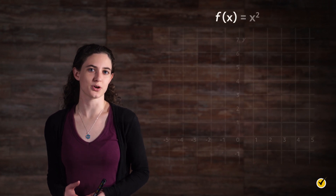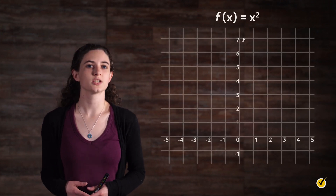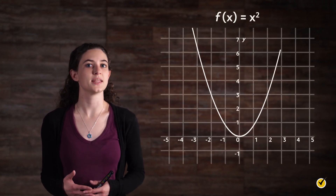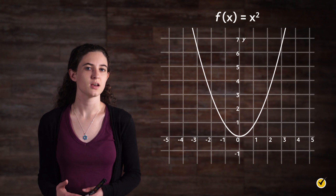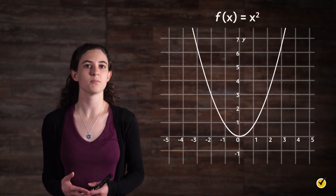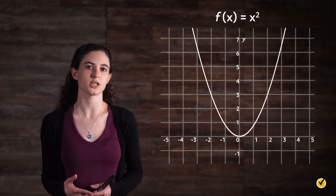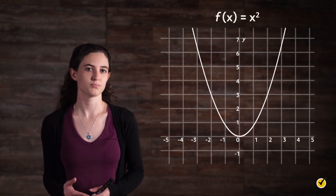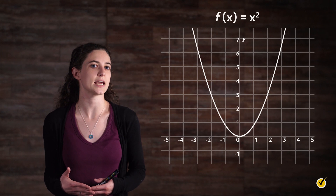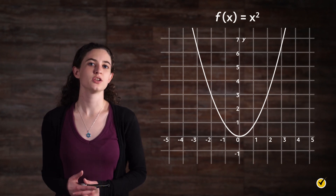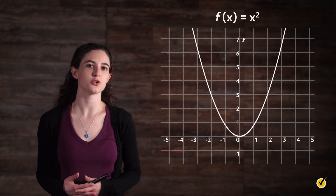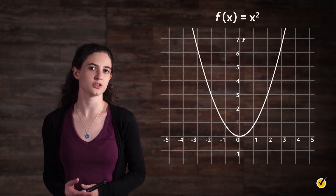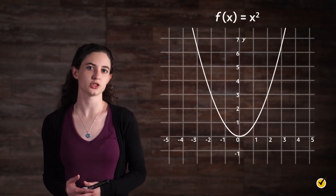Here's the graph of f(x) = x². Quadratic functions together can be called a family, and this particular function is the parent, because this is the most basic quadratic function — not transformed in any way. We can use this function to begin generalizing domains and ranges of quadratic functions.